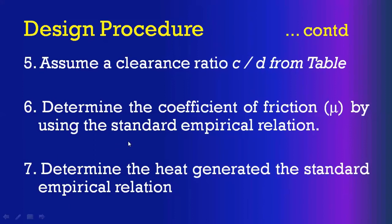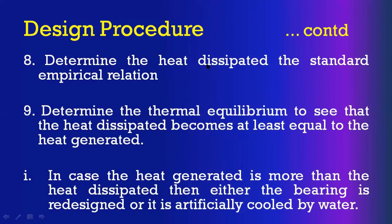The seventh step is to calculate heat dissipated using the standard empirical relation: H_d = C_A × (T_b − T_a), where C_A is a constant, T_b is the bearing temperature, and T_a is the ambient temperature.